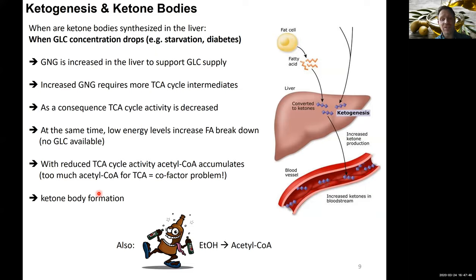Another interesting example is if you drank too much alcohol. If you remember how we dealt with ethanol catabolism—we converted it into acetyl-CoA. So in addition to alcohol being poisonous to your cells and slowing down metabolism as a whole, breaking down the alcohol in your blood increases acetyl-CoA production and you can run into the same problem. It's actually interesting that in severe cases of alcoholism, you can have similar symptoms of ketoacidosis as in a diabetic patient, because of this issue of accumulating acetyl-CoA.